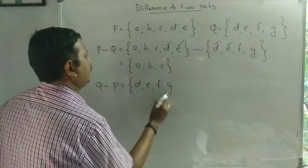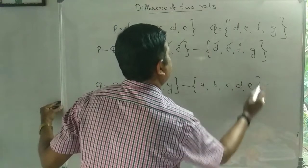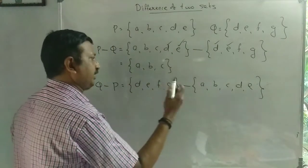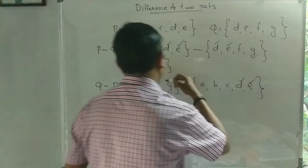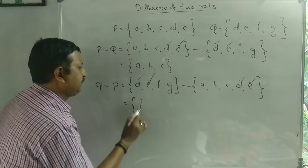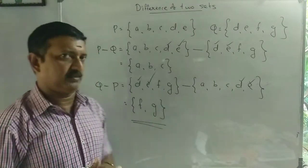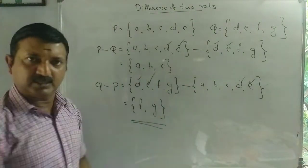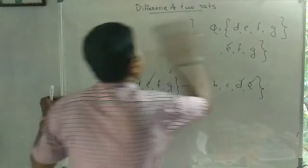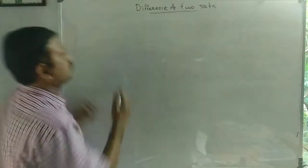D, E, F, G minus A, B, C, D, E. Q minus E — that's what we call Q and P. We call it D, F, E. We call it F, G. This is Q minus B. Okay, we call it F, G — Set Builder Form.